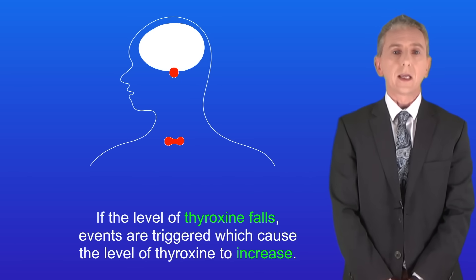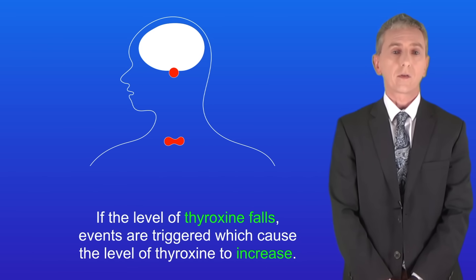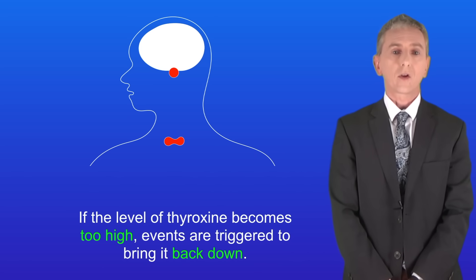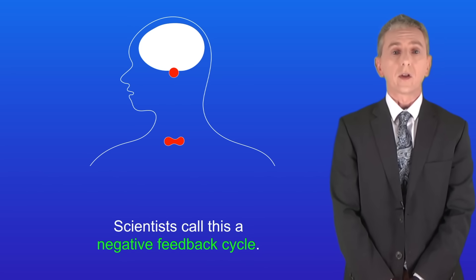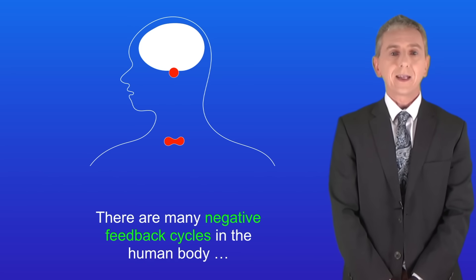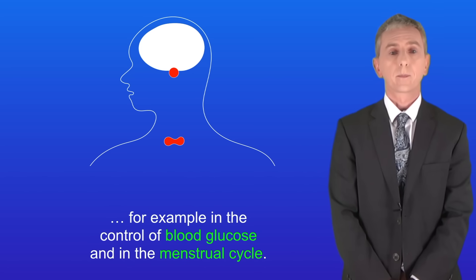So as you can see, if the level of thyroxine falls, events are triggered which cause the level of thyroxine to increase. And if the level of thyroxine becomes too high, events are triggered to bring it back down. Scientists call this a negative feedback cycle. There are many negative feedback cycles in the human body — for example in the control of blood glucose and in the menstrual cycle.